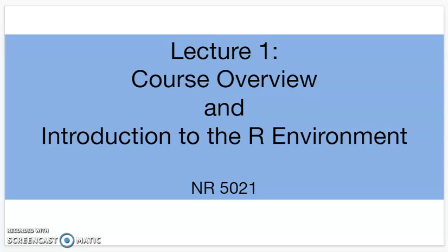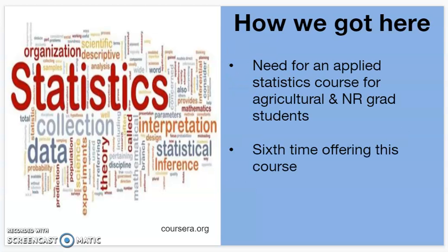This presentation will present a course overview of NR5021. There is a big need for applied statistics classes for agriculture and natural resources graduate students, and that was really the motivation for creating this course six years ago. There are a lot of courses at the University of Minnesota on statistics, but there really wasn't one that focused on statistics for natural resources and agriculture students.